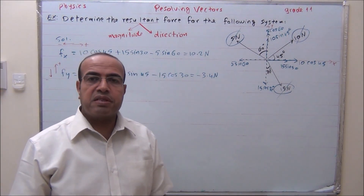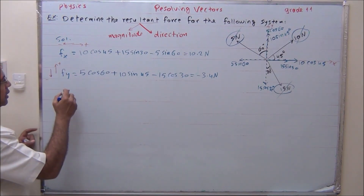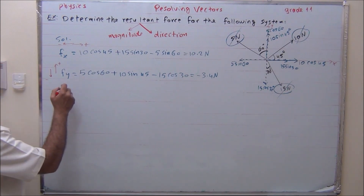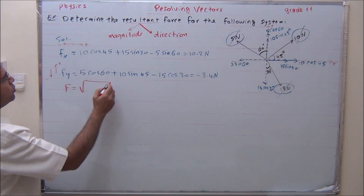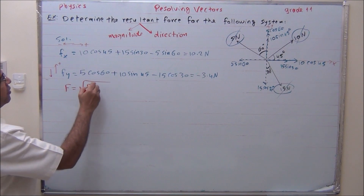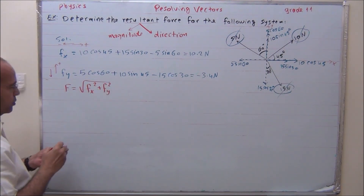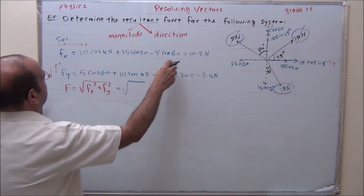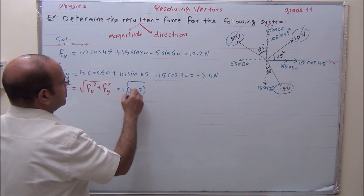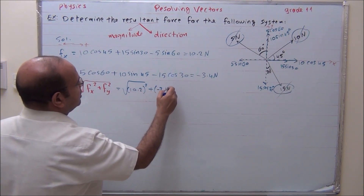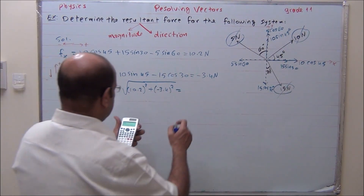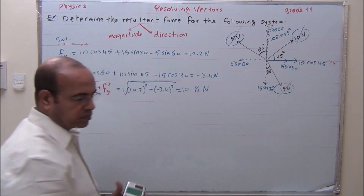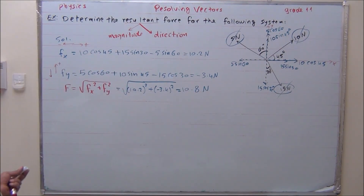The magnitude of the resultant force is denoted by F. F equals the square root of Fx squared plus Fy squared. F equals the square root of 10.2 squared plus negative 3.4 squared. The answer is 10.8 Newton. This is the magnitude of the resultant force.